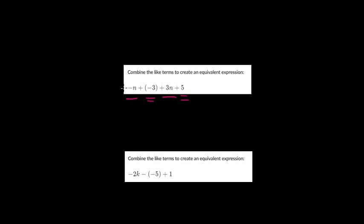So we have minus n plus 3n or minus 1n plus 3n. So essentially we're taking 1n away from 3n. So we get 2n. And then we have minus 3 plus 5 or if we flipped it we have 5 minus 3 which is just 2. So this just becomes 2n plus 2.